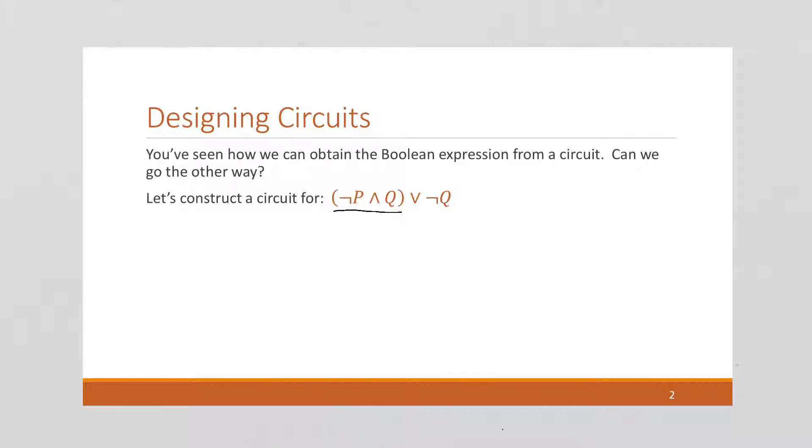And before I even do that, notice this P is negated. So, I'm going to start with two inputs, P and Q. And the first thing I'm going to do is add a NOT gate to this P to get that NOT P.